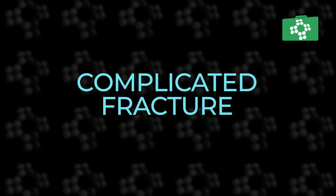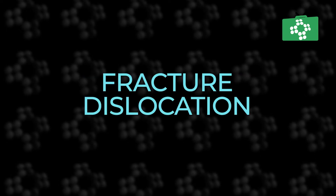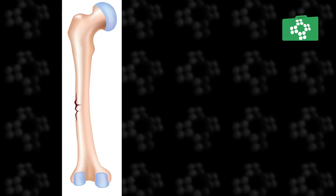A complicated fracture is one where there is injury to other parts of the body, such as major blood vessels and nerves. A fracture dislocation occurs when a joint becomes dislocated and there is also a fracture on one of the bones of the joint.